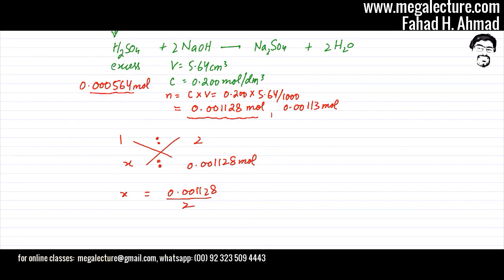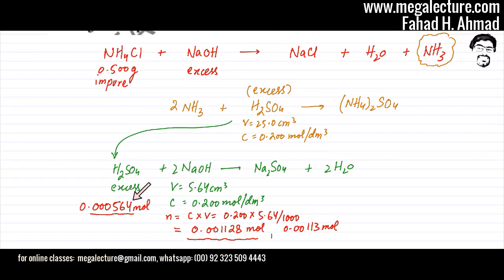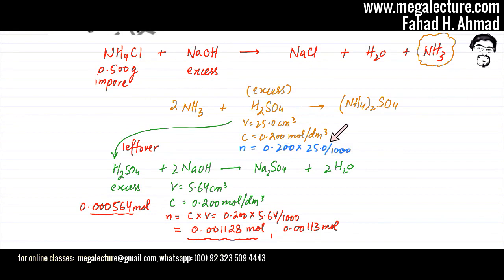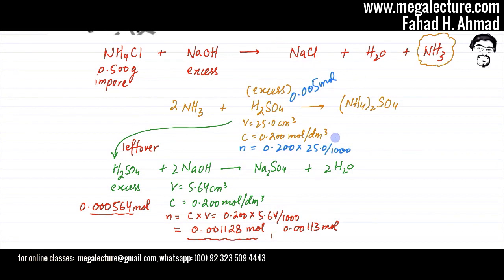Now let's find the moles of H2SO4 that were initially added to absorb the ammonia. Using volume = 25 cm³ and concentration = 0.200 mol per dm³: moles = 0.200 × (25 ÷ 1000) = 0.005 moles. So 0.005 moles of sulfuric acid were initially added to react with the ammonia.